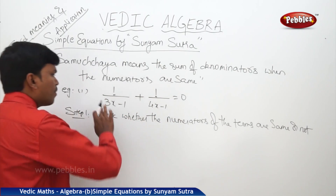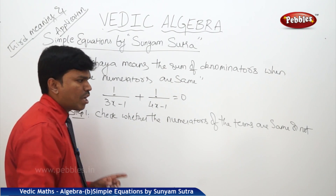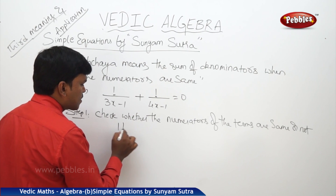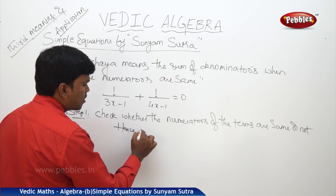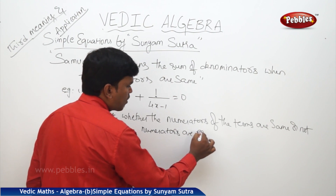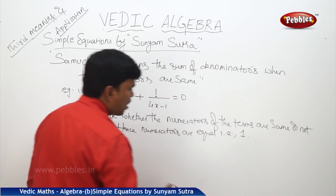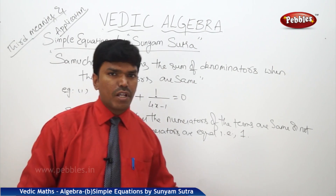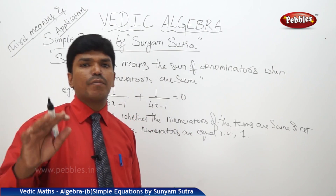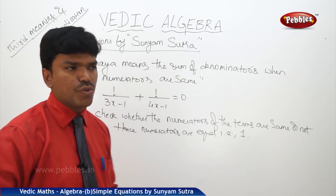The numerators of both terms — 1/(3x − 1) and 1/(4x − 1) — in both terms the numerator is 1. Hence, numerators are equal. Whenever the numerators are equal, you can simply take the sum of the denominators and equate it to 0 to get the solution.